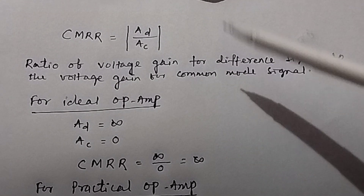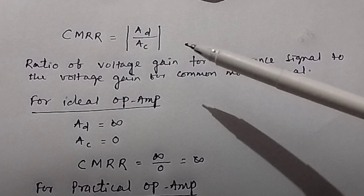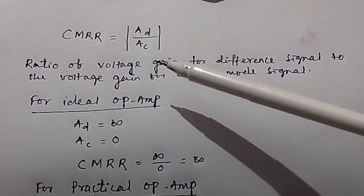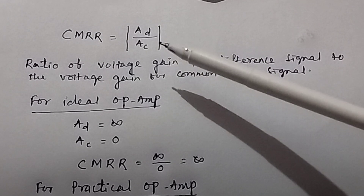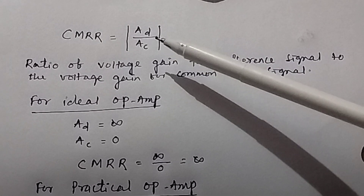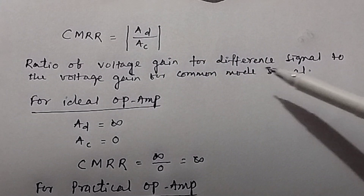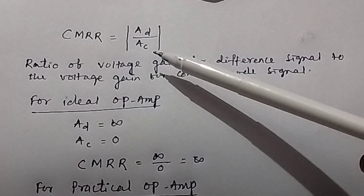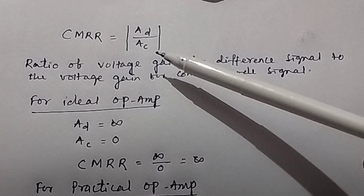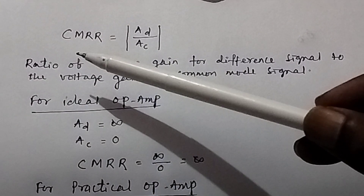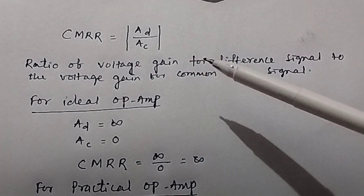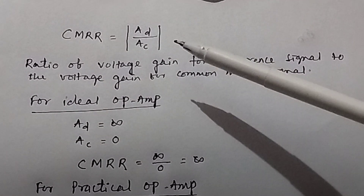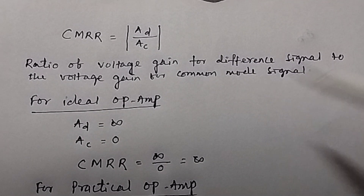You have two types of signal in a differential amplifier or operational amplifier. One is your difference signal and another one is your common mode signal. The voltage gain for the differential signal is AD, and the voltage gain for the common mode signal is AC. This ratio is called common mode rejection ratio or CMRR.